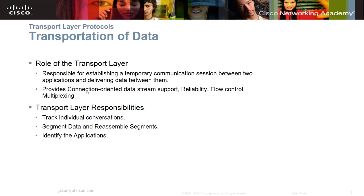What is the role of the transport layer in the OSI model? The transport layer is responsible for establishing a temporary communication session between two applications and delivering data between them. Think of it like making a phone call — you dial a number, the phone rings, someone picks up, and you establish a connection. It also provides connection-oriented data stream support, reliability, flow control, and multiplexing.